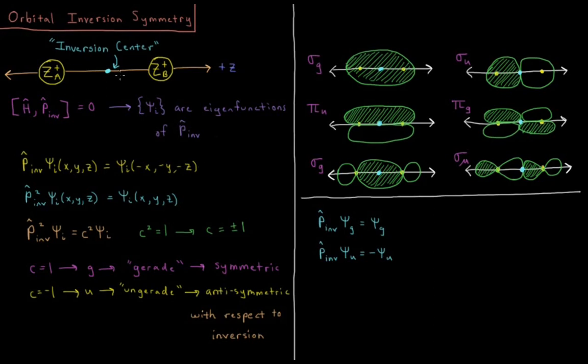So for a homonuclear diatomic, we have inversion symmetry. Our molecular orbitals are all going to either be symmetric or anti-symmetric with respect to the inversion operator, having an eigenvalue of plus one or minus one. If it's plus one, it's gerata, and they are symmetric with respect to inversion. If it's minus one, they are ungerata and anti-symmetric to inversion, giving us labels of subscript g and subscript u to apply to our molecular orbitals.